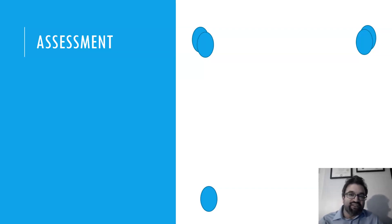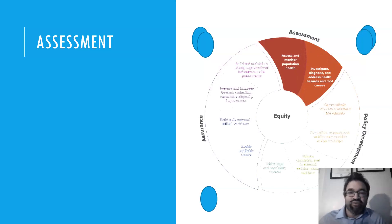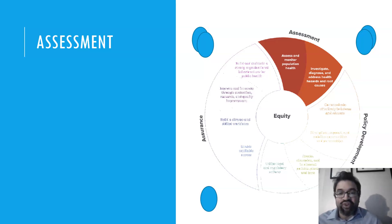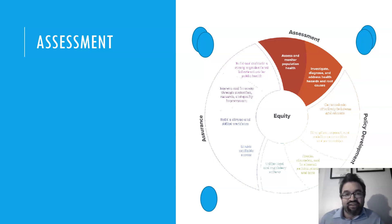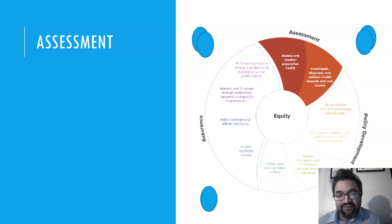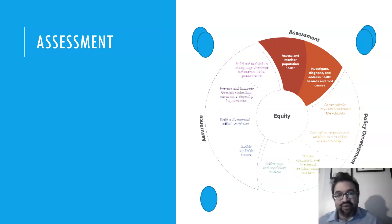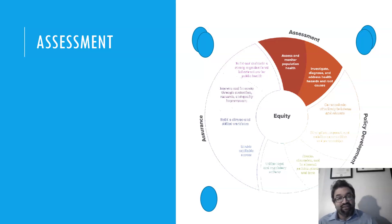To categorize these, the first category is assessment. When conducting assessment, you assess and monitor population health and investigate, diagnose, and address health hazards and root causes. This is where you're trying to get to the very root of the matter to better understand what the population health issue or problem is. Just as a medical practitioner takes the pulse of a patient, public health practitioners go into the community to take a pulse, understand where health stands currently, diagnose what is going on, and ideally address the underlying social root cause of the issue.